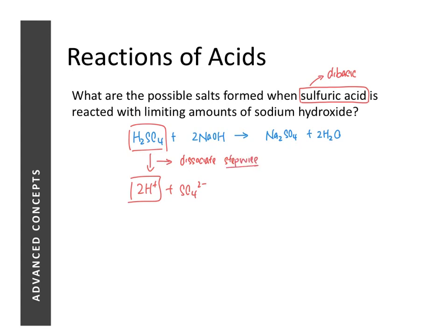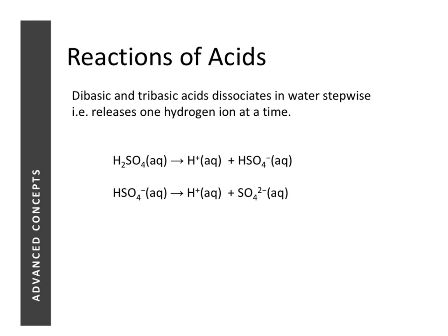What is interesting about dibasic acids is that they will dissociate or ionize stepwise — meaning they release one hydrogen ion at a time. Looking at the example of sulfuric acid, when it ionizes it will first release one hydrogen ion. When it loses a unit of positive charge, the remaining ion carries a unit of negative charge. That ion can further dissociate in a second reaction to produce another hydrogen ion and the sulfate ion.